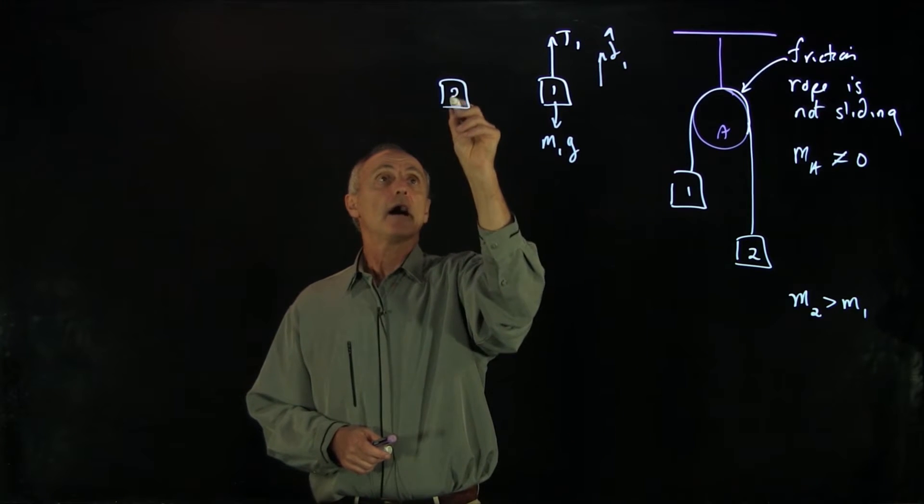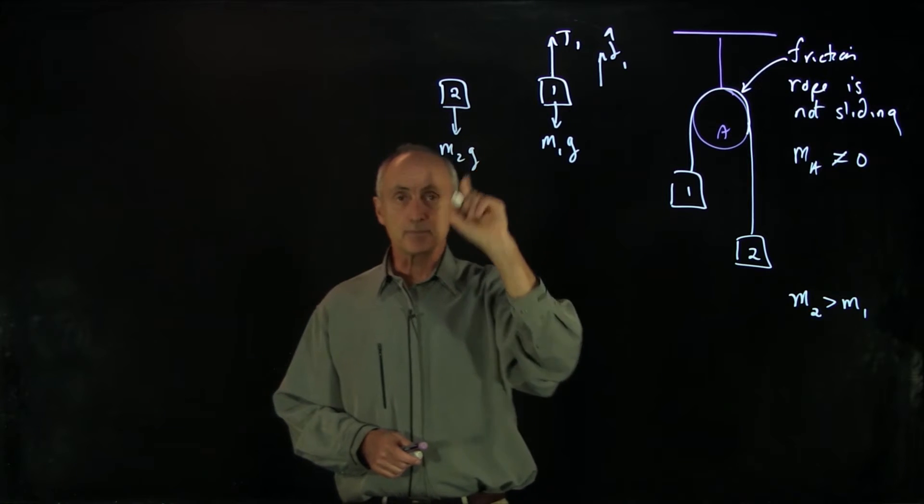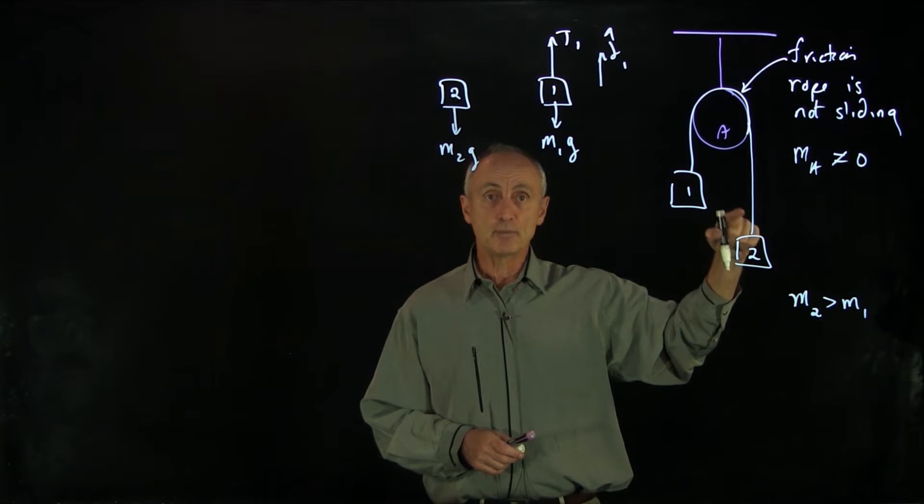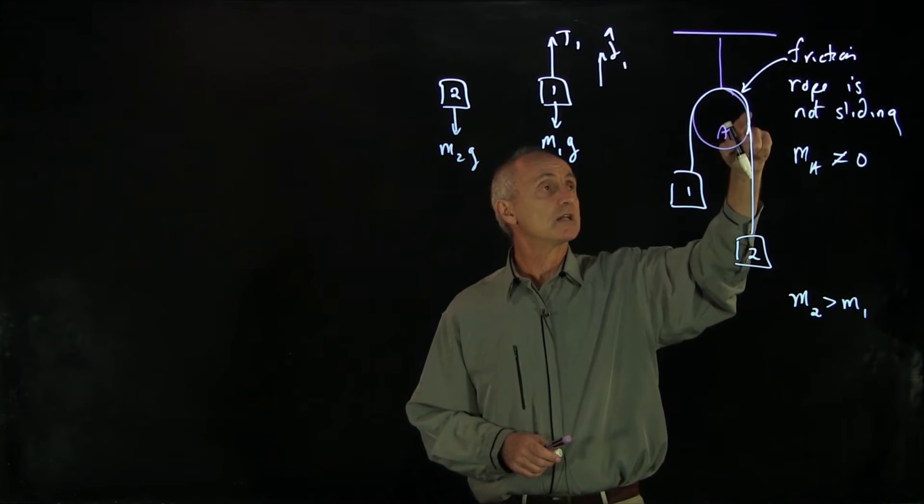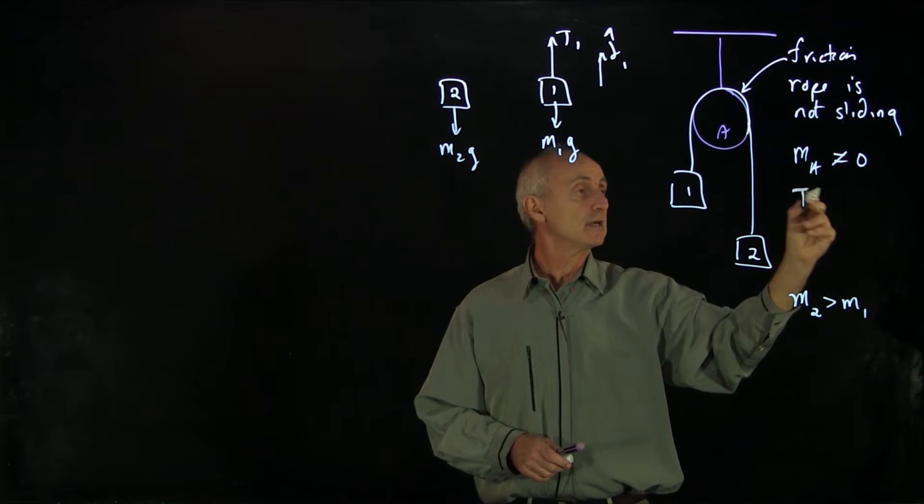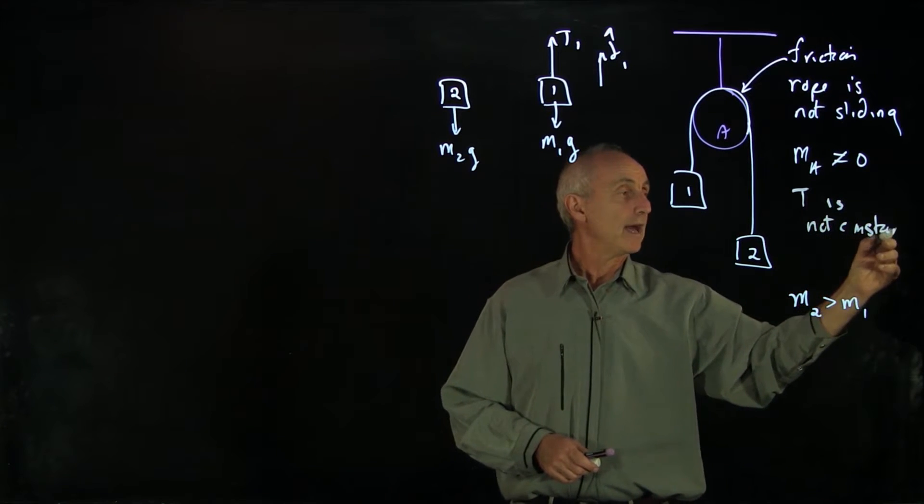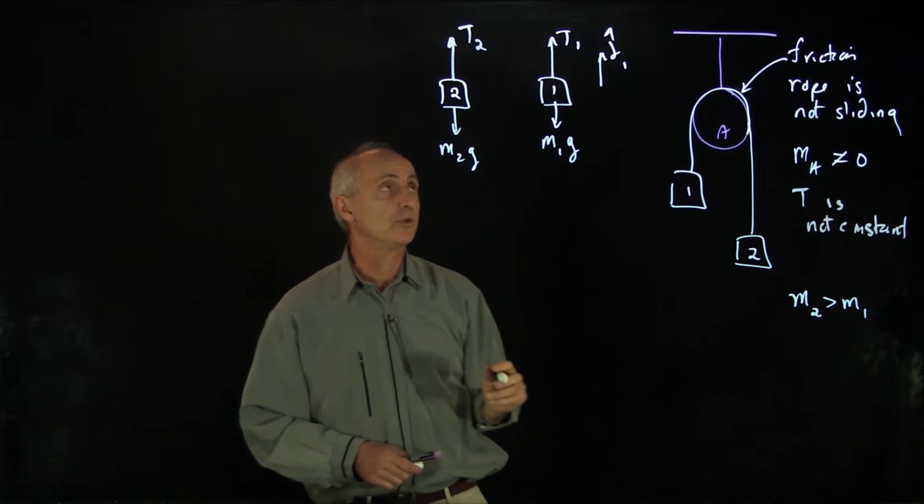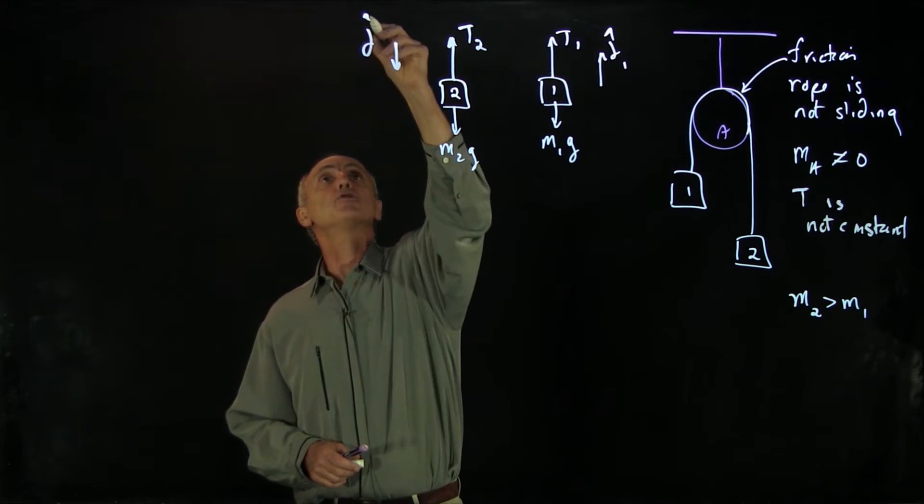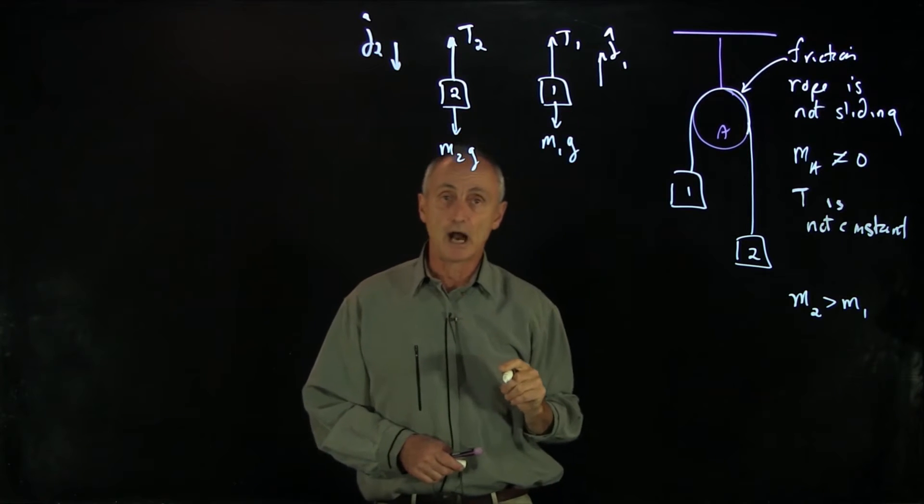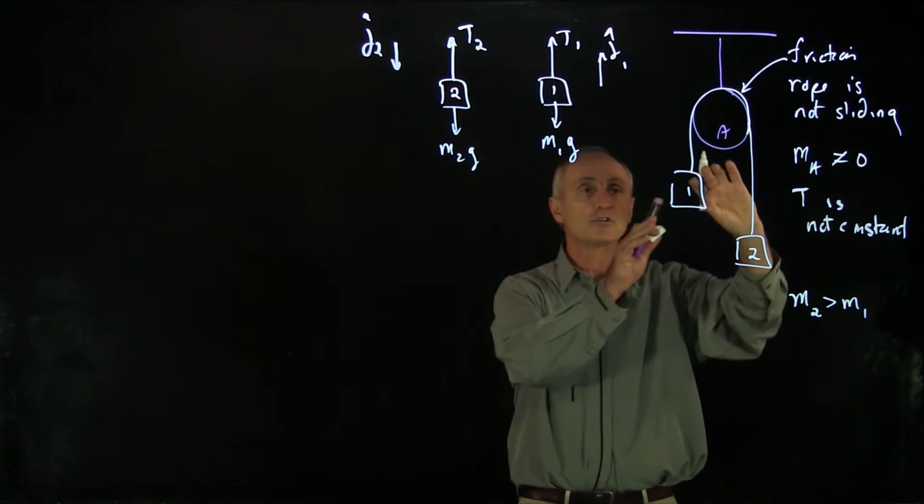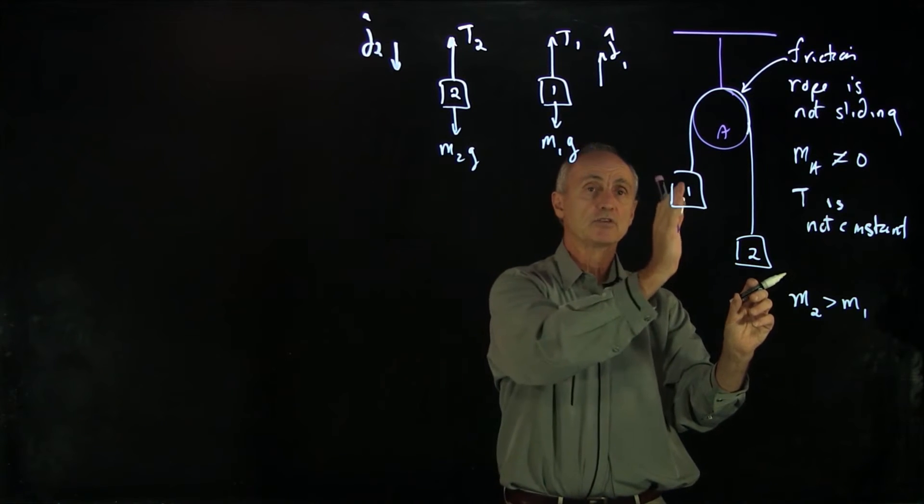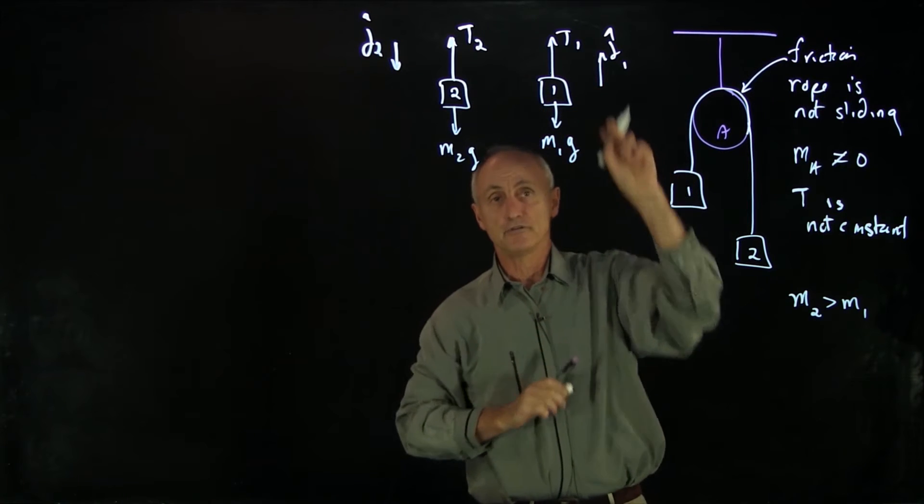Now, for block two, I have M2g. Here's the place where lots of people get tripped up. In the past, we've been assuming that the tension in the rope is uniform everywhere. In this problem, because the rope is not slipping and the pulley is not massless, the tension is not constant everywhere in the rope. So I'll have to identify a different tension on the other side, T2, pulling the block up. I'm going to choose j hat two down. Notice my unit vectors are chosen in opposite directions. The reason for that is that there's a constraint here that as block two goes down, block one goes up.